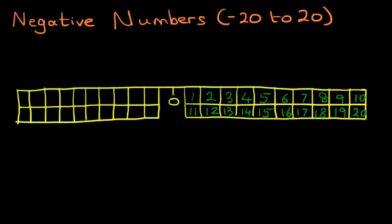However, what is different now is what we do on the left. Here we're going to do this in red. So the first box on the left is minus one. Then we have minus two, minus three, minus four, minus five, minus six, minus seven, minus eight, minus nine, and minus ten.